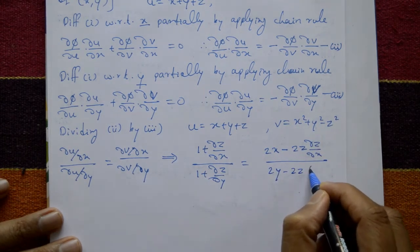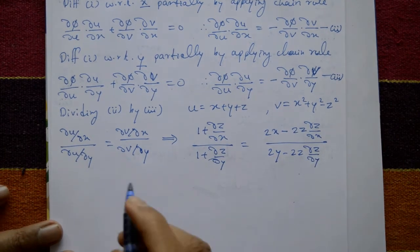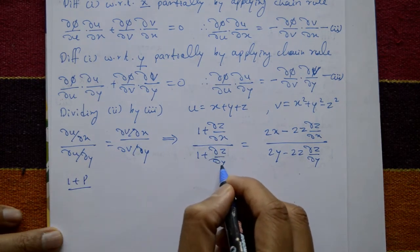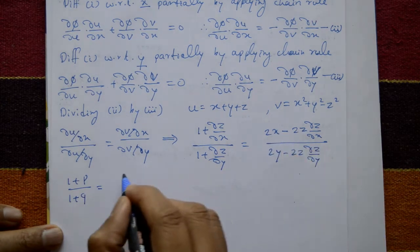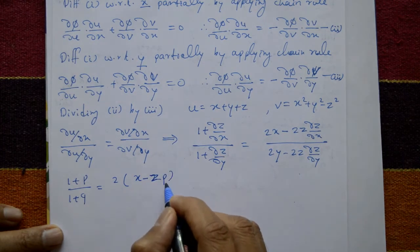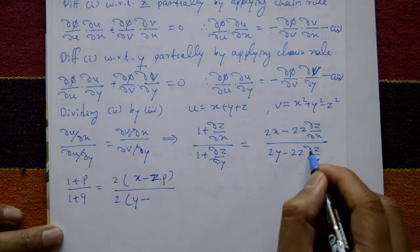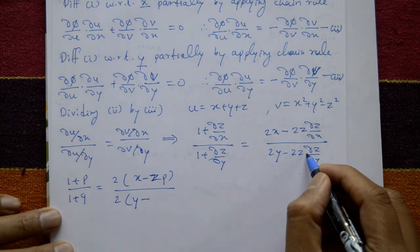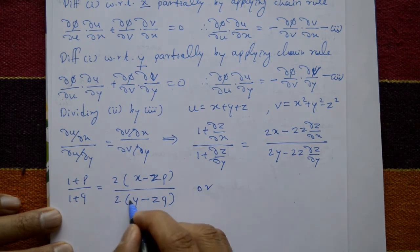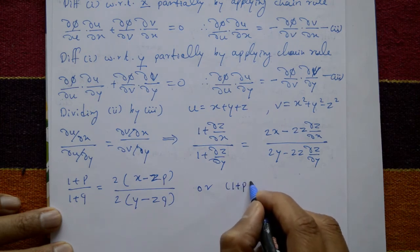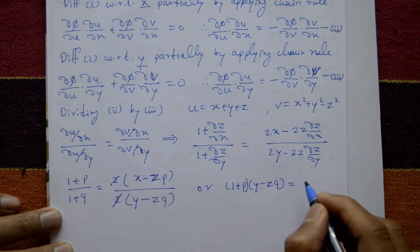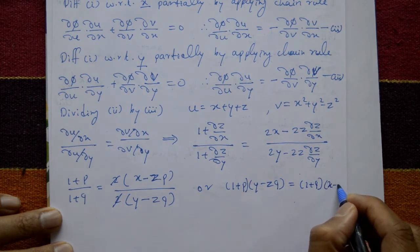Substituting ∂z/∂x = p and ∂z/∂y = q, we get (1+p)/(1+q) = (2x - 2zp)/(2y - 2zq). Factor out 2 on the right side and cross multiply: (1+p)(y - zq) = (1+q)(x - zp).